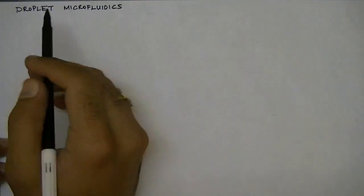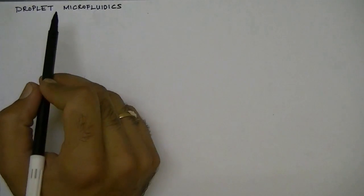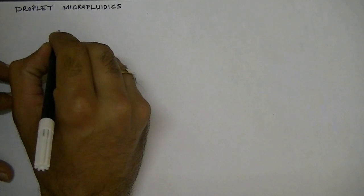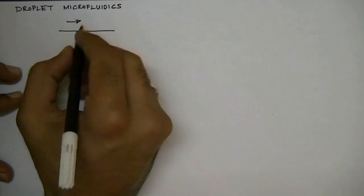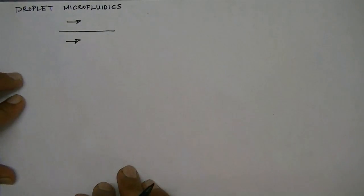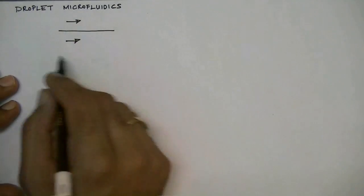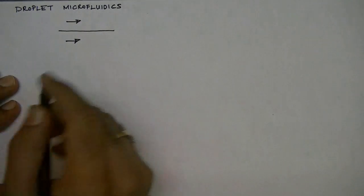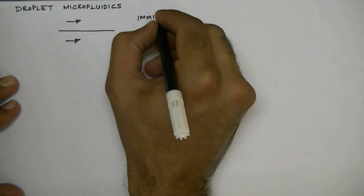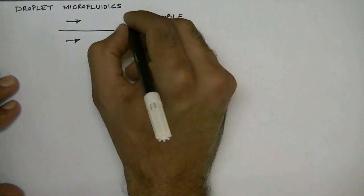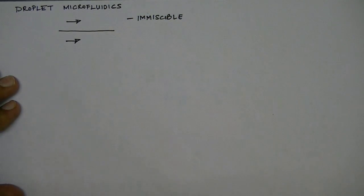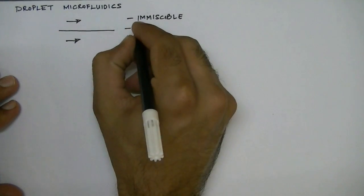In this lecture we will talk about droplet microfluidics. Droplet microfluidics deals with how we can generate droplets of one fluid which is immiscible in another fluid in a microfluidic device. The key idea is that we have two liquids — a first liquid and a second liquid — that are flowing alongside each other, and we can make a microfluidic device which allows us to do this.